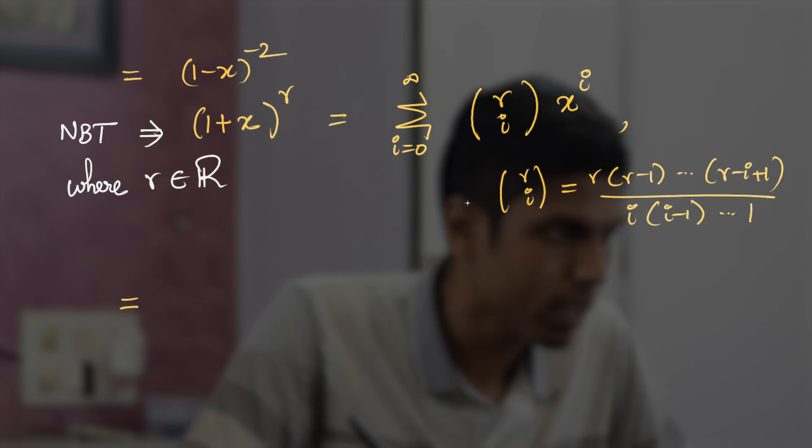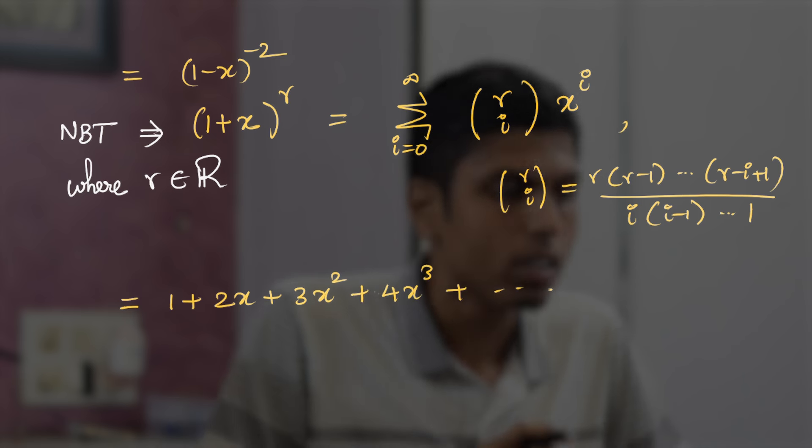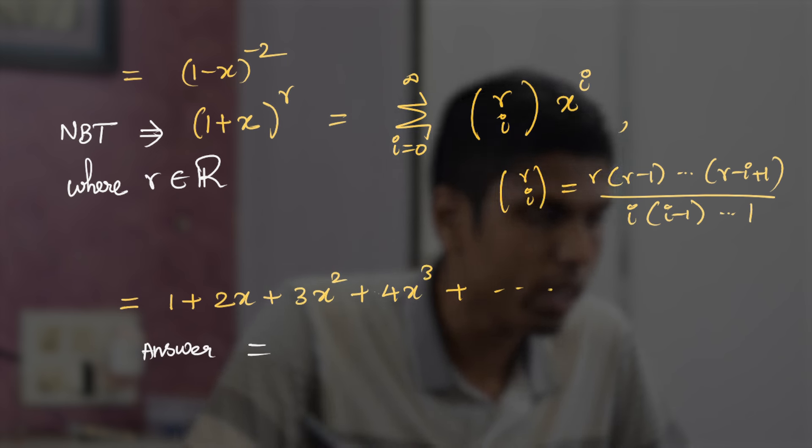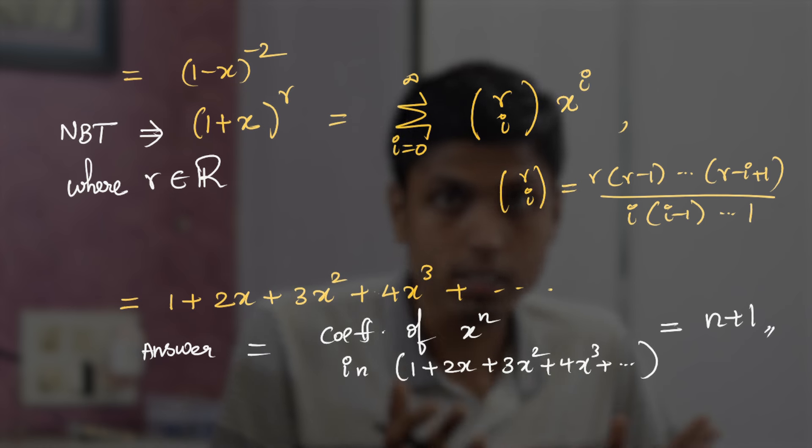So using that, -2 is real, and we can apply this to get the expansion of (1 - x)^(-2). And you will be wondering this to be 1 + 2x + 3x^2 + 4x^3 and so on. So what would be the coefficient of x^n in this? Thus, our answer would be the coefficient of x^n in 1 + 2x + 3x^2 + 4x^3 and so on, which is nothing but n + 1.